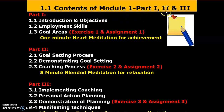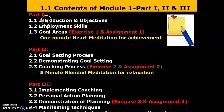The content of Module 1 has three parts. Part 1 will be completed in three sessions depending upon your response — it may finish earlier or take more time. Make it interactive; ask clarifications, ask more doubts. Part 1 covers introduction and objectives, employment skills, and what skills are required for employment and what the goal areas are. Exercises and assignments will also be there, along with a one-minute heart meditation for achievement.